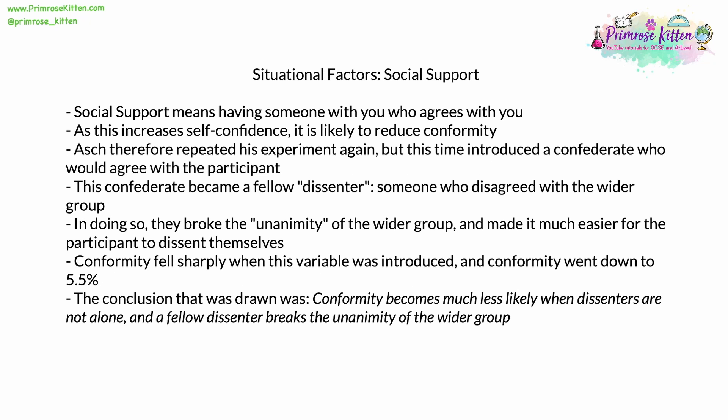Another situational factor is social support — having someone in the group who agrees with you rather than the wider group, which increases self-confidence and reduces conformity. Asch repeated the experiment introducing one confederate who would always agree with the one real participant, becoming a fellow dissenter who broke the unanimity of the wider group. This made it much easier for the real participant to dissent. When this variable was introduced, conformity fell sharply to just 5.5%. The conclusion: conformity is much less likely when dissenters are not alone and unanimity is broken.